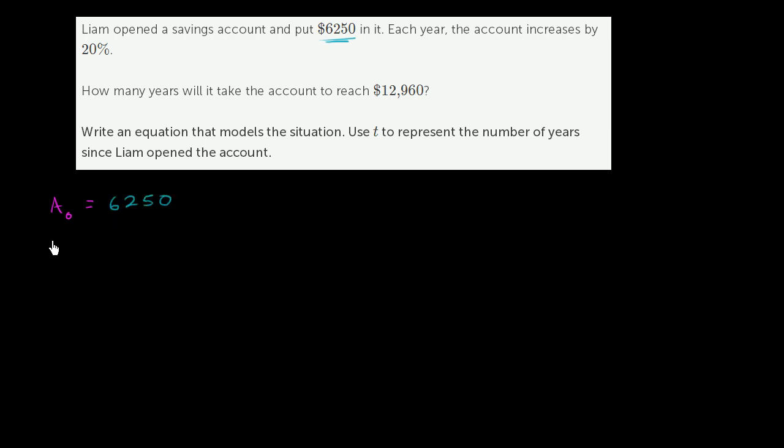Now, let's say it's been 1 year since he opened the account. How much will he have? Well, he's going to have 6,250 plus 20% of 6,250. It grows 20% every year. So this is how much he started the year with, and then he gets another 20% of that 6,250. If we factor out a 6,250, this is equal to 6,250 times 1.2.